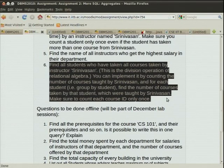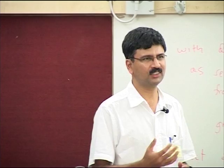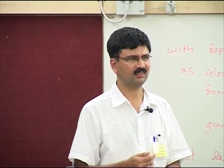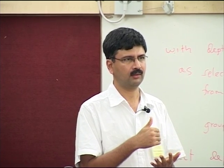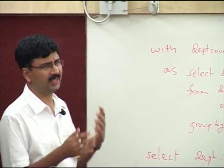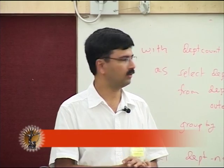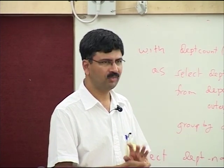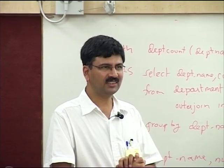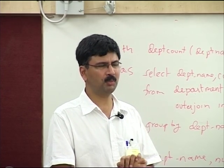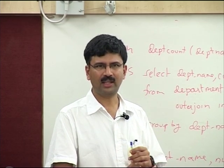Find students who have taken all courses taught by Srinivasan. In relational algebra it is easy with the division operation, but in SQL it is complex. There is an example in the slides showing how to express the division operator using SQL. The English is ambiguous — does it mean they took every course Srinivasan taught (by course ID) or every section taught by Srinivasan? The cleaner interpretation: if Srinivasan taught course 101, the student should have taken course 101.